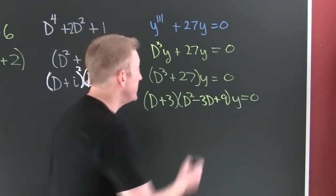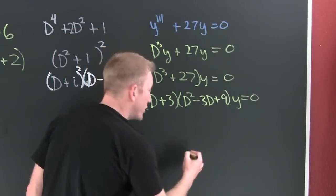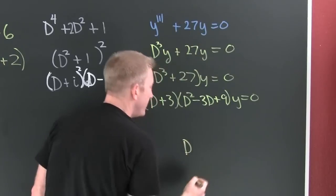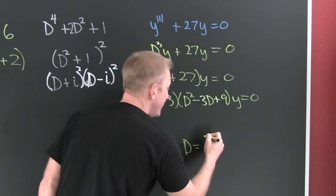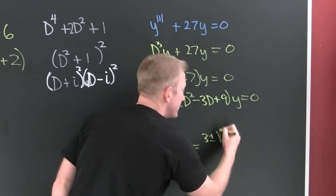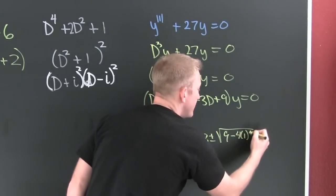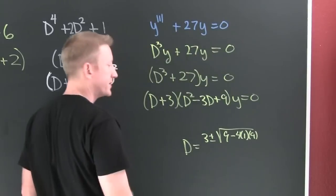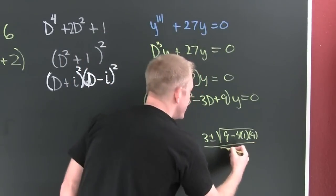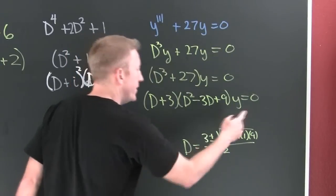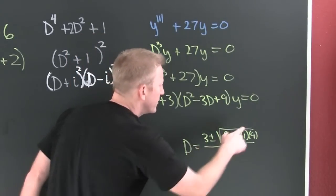Now if you wanted to take that down to linear factors you could, and then you'd use the quadratic formula on it. D is gonna be minus b plus and minus the square root of nine minus four times one times nine. Looks like it's gonna be imaginary.